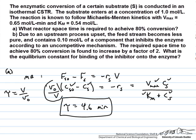Okay, so now in part B of this problem, we have some kind of upstream process upset where the feed stream becomes less pure, and there is a component that inhibits the enzyme that is present at a concentration of 0.1 moles per liter that affects the enzyme through an uncompetitive mechanism.